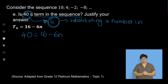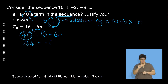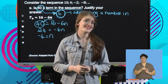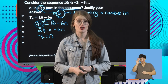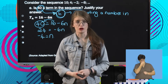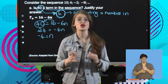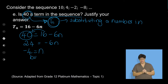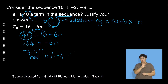Let's see if it works. I substitute in 40 for Tn: 40 equals 16 minus 6n, so carrying the 16 over gives 24 equals negative 6n. Dividing both sides by negative 6 gives n equals negative 4. This has posed a problem — we can't find the negative fourth term of a pattern; term numbers are whole numbers. Because n equals negative 4, that means 40 is not part of this pattern. Therefore, n cannot equal negative 4, so 40 is not a term in the pattern.